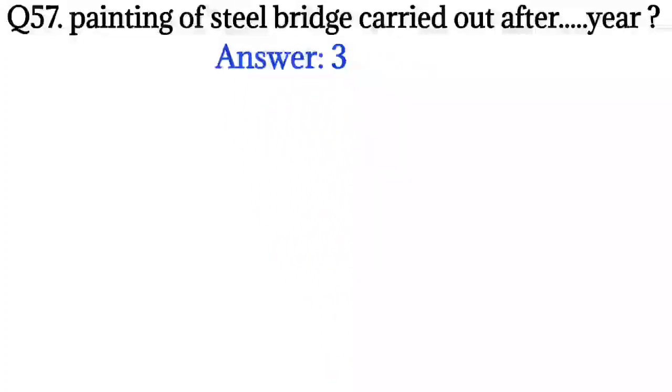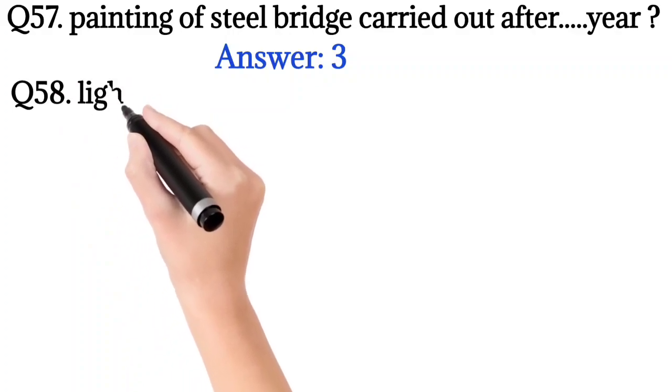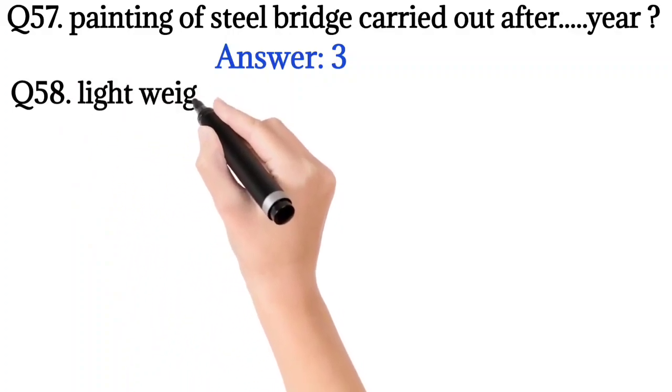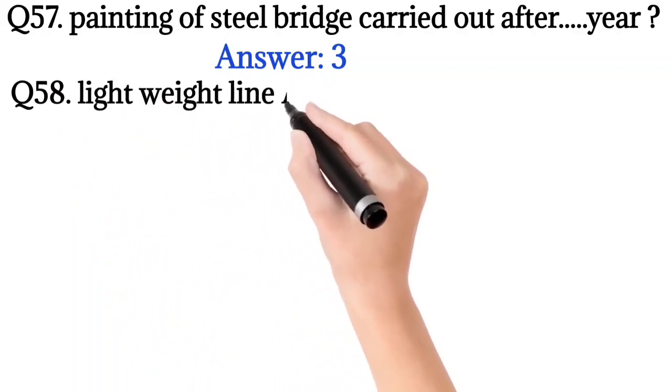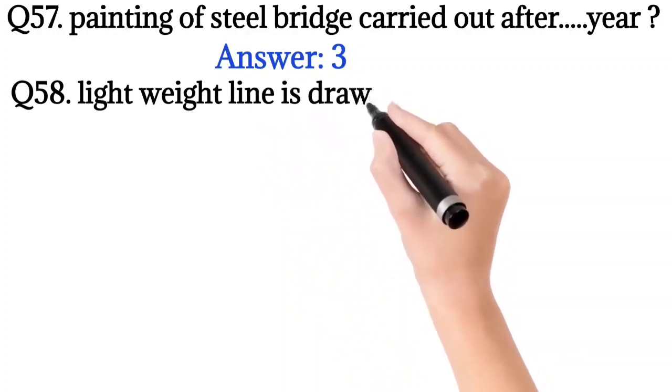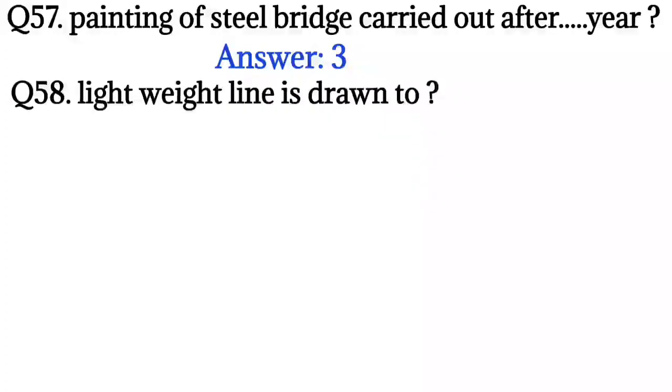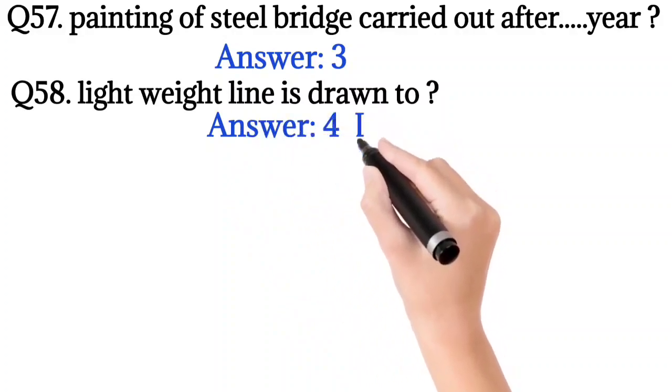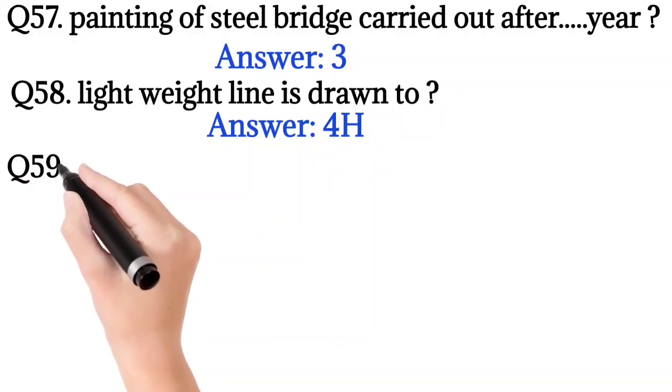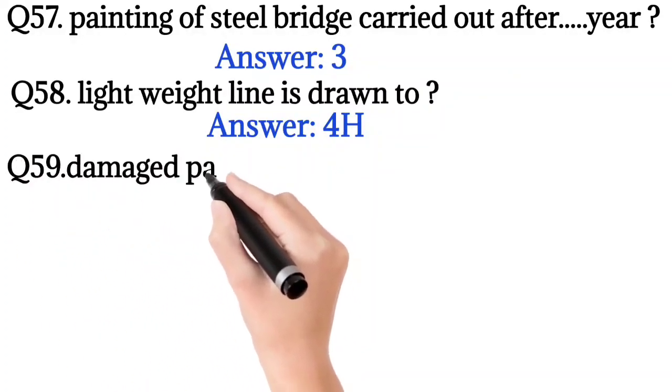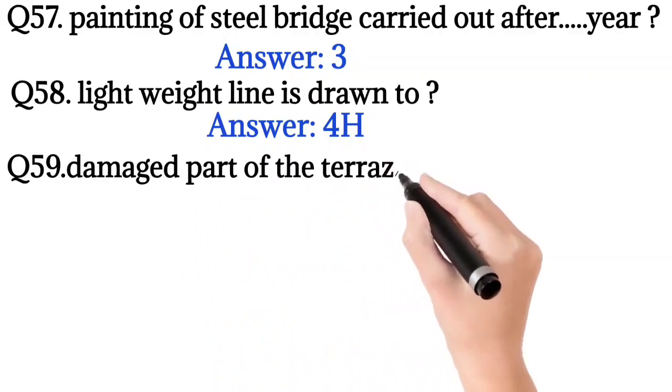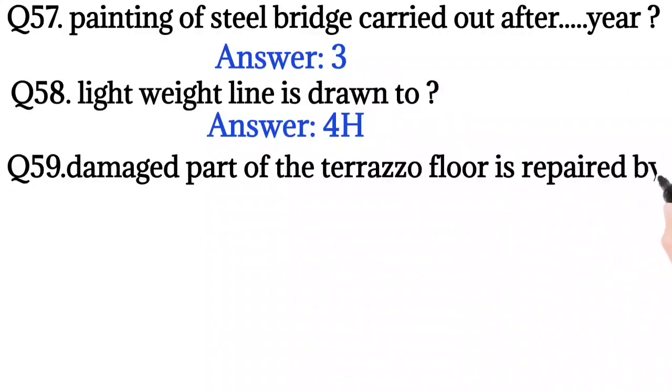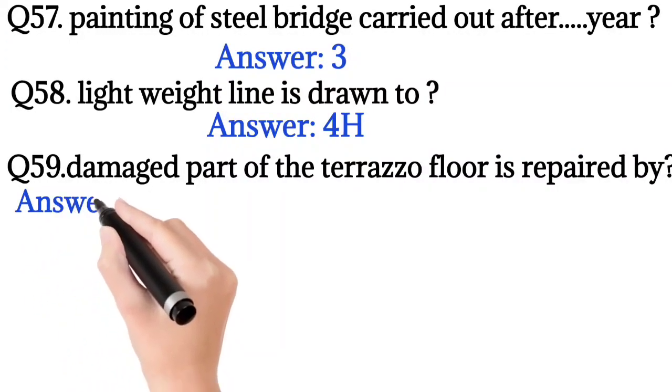So the answer is after 3 years. Question number 58: Light weight line is drawn to? So the answer is 4H pencil. Question number 59: Damaged part of the terrazzo floor is repaired by?